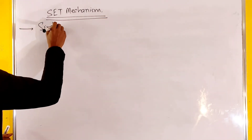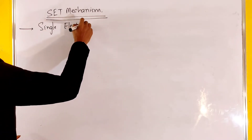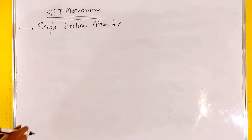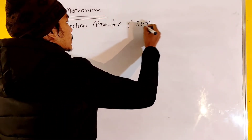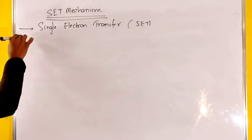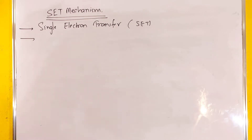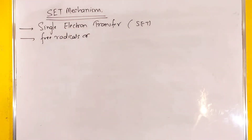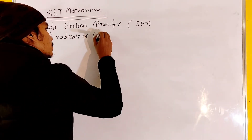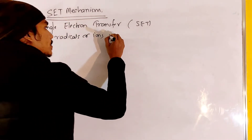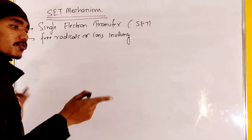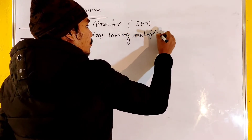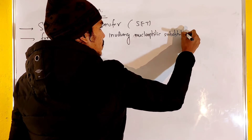Single electron transfer. This is the single electron transfer mechanism. This is the free radical formation. Free radicals or ions involving nucleophilic substitution reaction — that means involving nucleophilic substitution reaction.